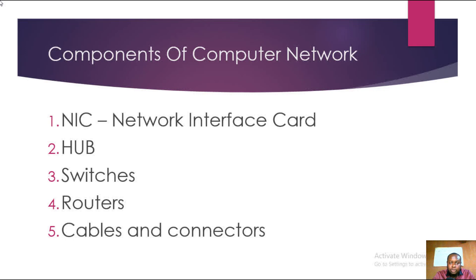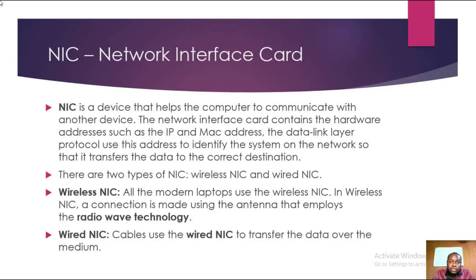Components of a computer network: we have the NIC, which stands for Network Interface Card; we also have the hub, the switches, the routers, cables, and connectors. A Network Interface Card is a device that helps the computer to communicate with another device. It contains hardware addresses such as the IP address and the MAC address. The data link layer protocol uses this address to identify the system on the network so that it can transfer data to the correct destination.